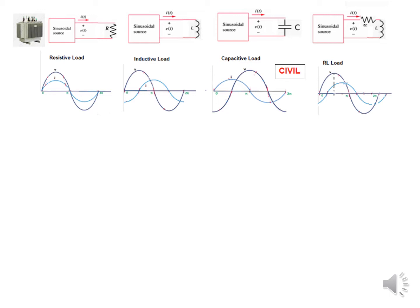For an inductive load, the current is lagging; for a capacitive load, the current is leading. For an RL circuit, the current is also lagging but not as much as a pure inductor — in the pure inductor it is 90 degrees, whereas in the RL circuit it may be reduced to perhaps 45 degrees.